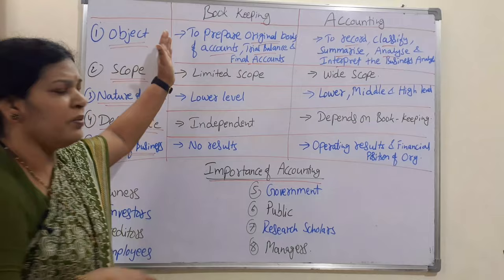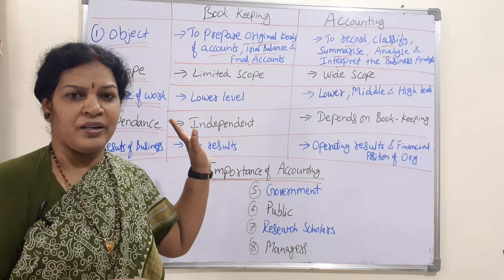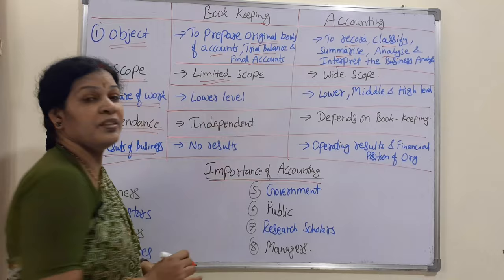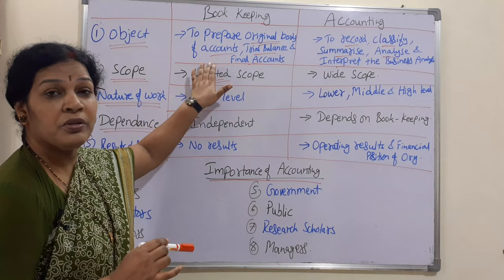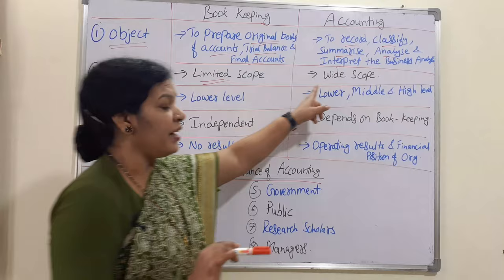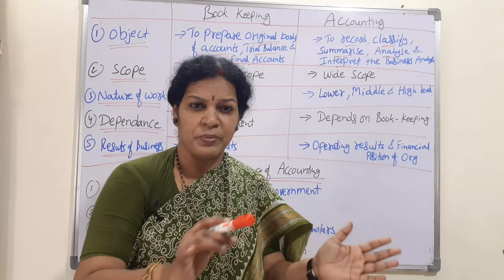This is also why the scope of bookkeeping is very limited — it is only to prepare the original books of accounts, trial balance, and balance sheet. That's it. So bookkeeping has a limited scope, whereas accounting has a very wide scope.